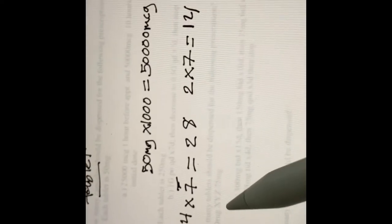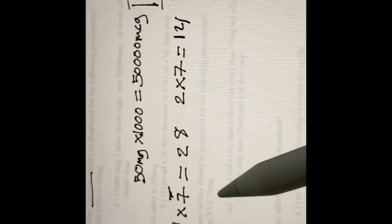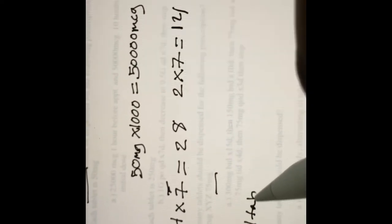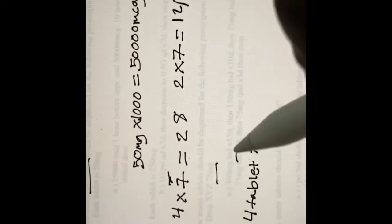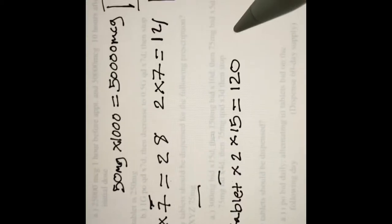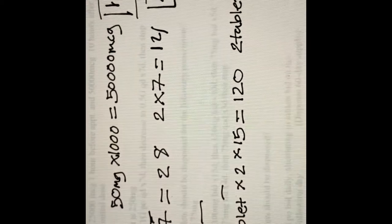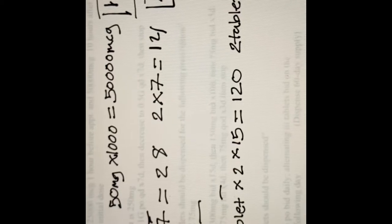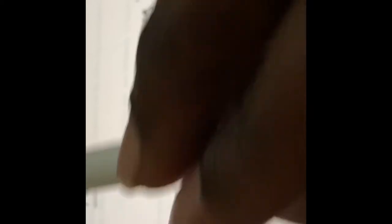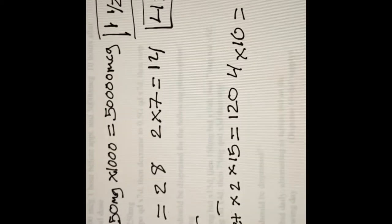For number 2A, how many tablets should be dispensed for the following prescription? Drug XYZ, 75 milligrams. If we have 300 milligrams, we know that's four tablets, times two for twice a day, then multiply by 15, which gives us 120 tablets. The next segment is 150 milligrams, so that would be two tablets times two, which equals four, times ten, giving us 40 tablets.